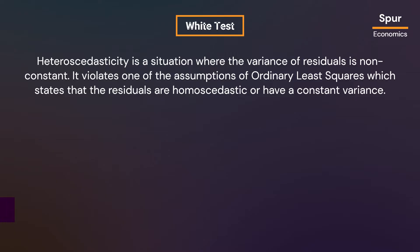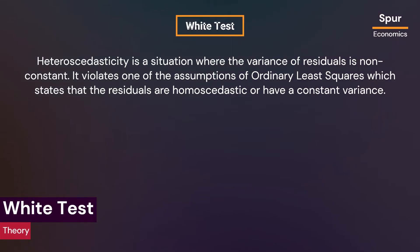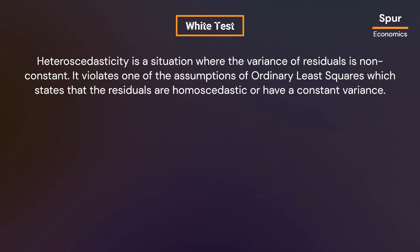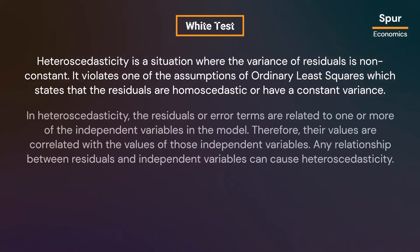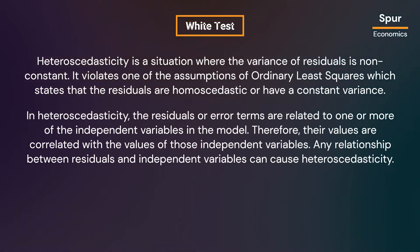The White test is one of the most commonly used statistical methods for detecting heteroscedasticity. Heteroscedasticity is a situation where the variance of residuals is non-constant, violating the OLS assumption of homoscedasticity. In heteroscedasticity, the residuals or error terms are related to one or more of the independent variables, so their values are correlated with those independent variables.